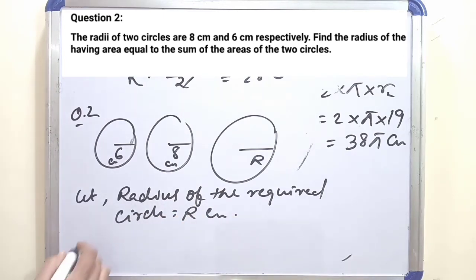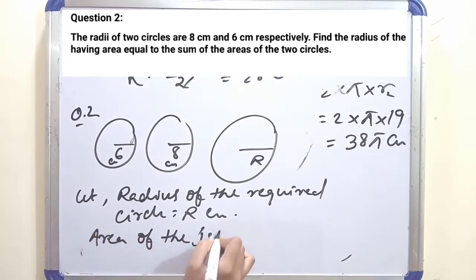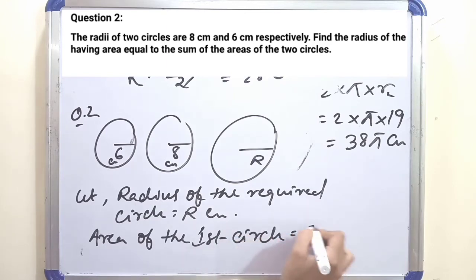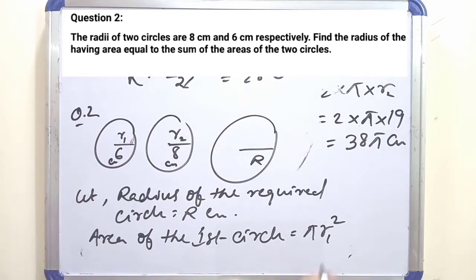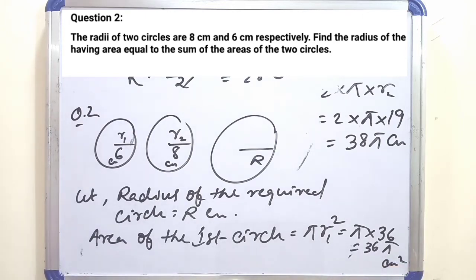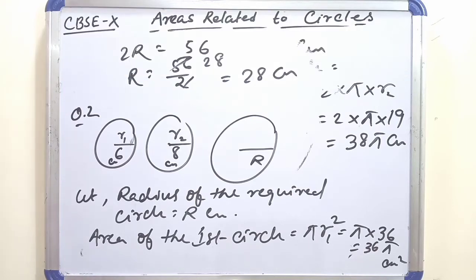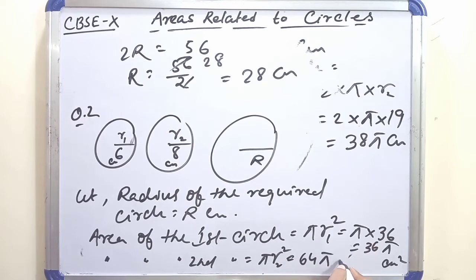Area of the first circle = πr₁² = π × 6² = 36π cm². Area of the second circle = πr₂² = π × 8² = 64π cm².